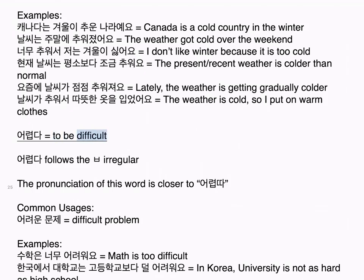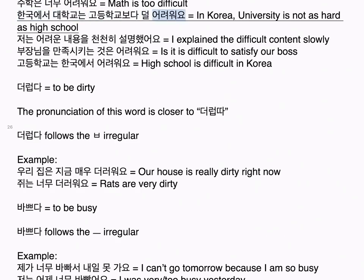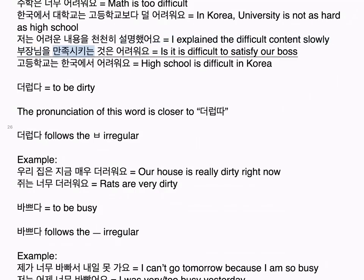어렵다 means to be difficult. 어렵다 follows the 비읍 irregular. The pronunciation is closer to 어렵다. Common usages: 어려운 문제 means difficult problem. Examples: 수학은 너무 어려워요. Math is too difficult. 한국에서 대학교는 고등학교보다 덜 어려워요. In Korea, university is not as hard as high school. 저는 어려운 내용을 천천히 설명했어요. I explained the difficult content slowly. 부장님을 만족시키는 것은 어려워요. It is difficult to satisfy our boss. 고등학교는 한국에서 어려워요. High school is difficult in Korea.